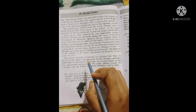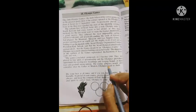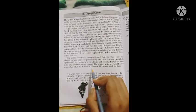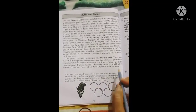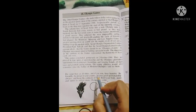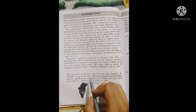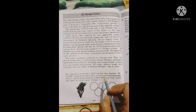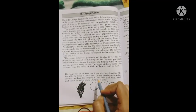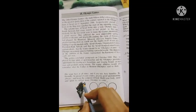The young athletes would always remember what the father of modern Olympics said to them: Do your best at all times and if you win, have humility. Be friendly, be proud of your country, practice good sportsmanship always, and keep the company of God. Build your body, mind, and spirit to outlast many Olympics to come.